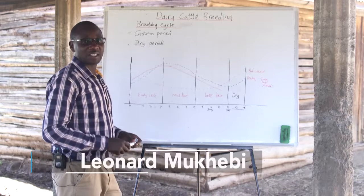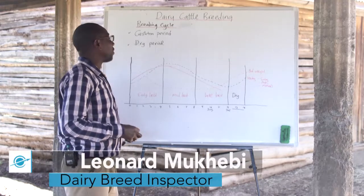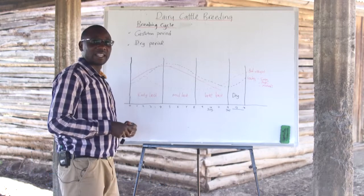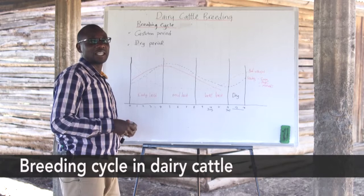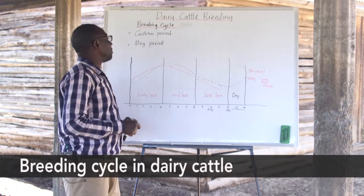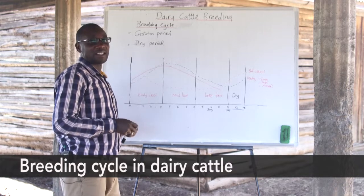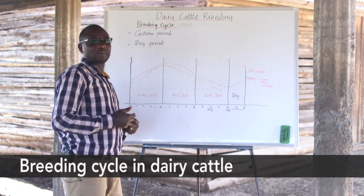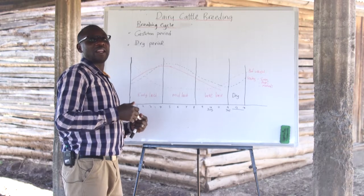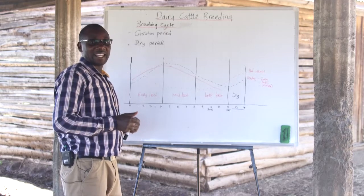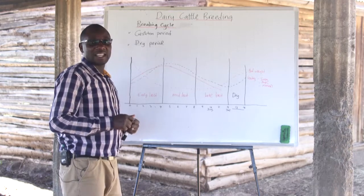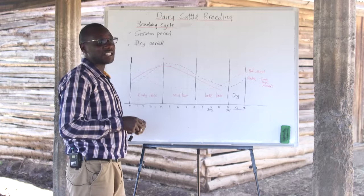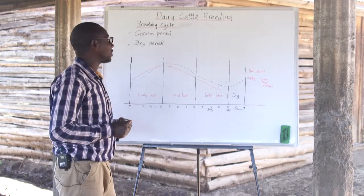In this section we're going to talk about the breeding cycle in dairy cattle, and we need to understand some of the terminologies that are always used. A normal breeding cycle basically defines the time from when a cow calves down to the time when it will calve again. This is always described as the intercalving interval, as we'll be able to see in our chart here.